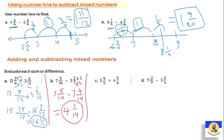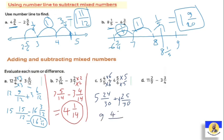Letter c: five and four over five plus four and five over six. We multiply by six up and down here and five up and down there. It becomes five and twenty-four over thirty plus four and twenty-five over thirty. Adding: five plus four is nine, and twenty-four plus twenty-five is forty-nine over thirty. The answer is nine and forty-nine over thirty.